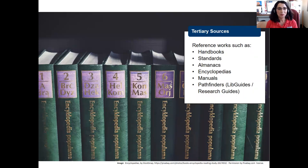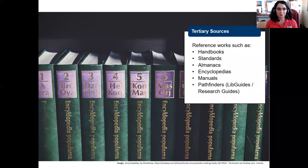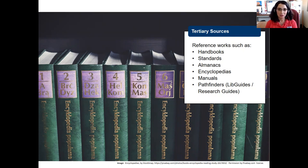Tertiary sources are things like the World Almanac and the Guinness Book of World Records — things that give us quick facts and figures. These include handbooks like the DSM, standards, almanacs, encyclopedias, and manuals. These are the books of facts and little pieces of information that we may need to know and cite occasionally.